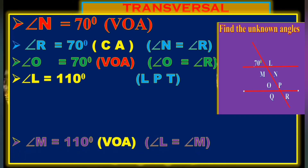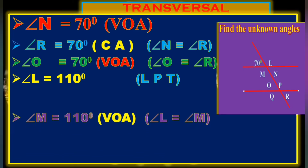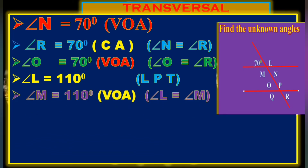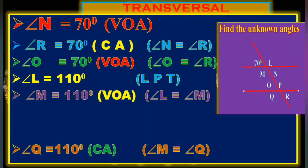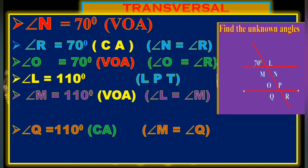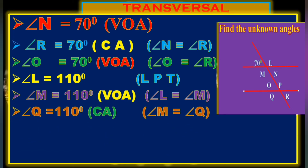The transversal stands on the line. Compare with the adjacent angle: the sum of the adjacent angles is 180 degrees. So 70 plus L equals 180 degrees, therefore L equals 110 degrees.